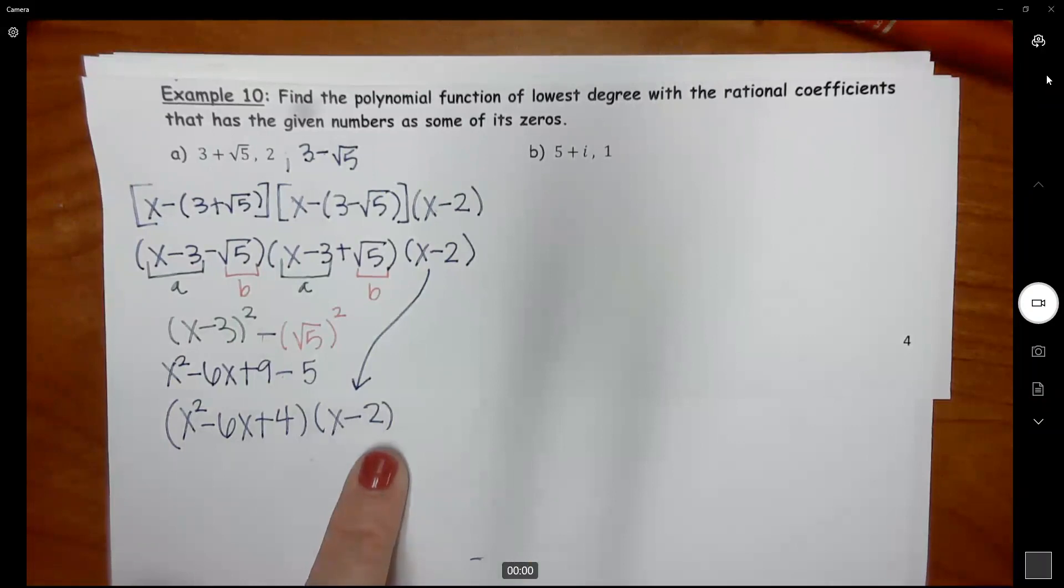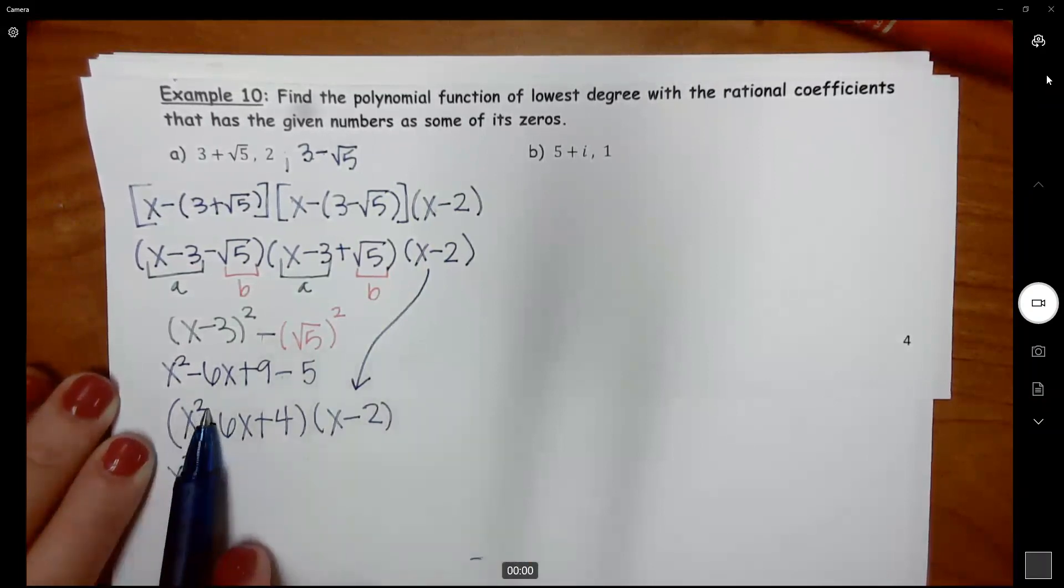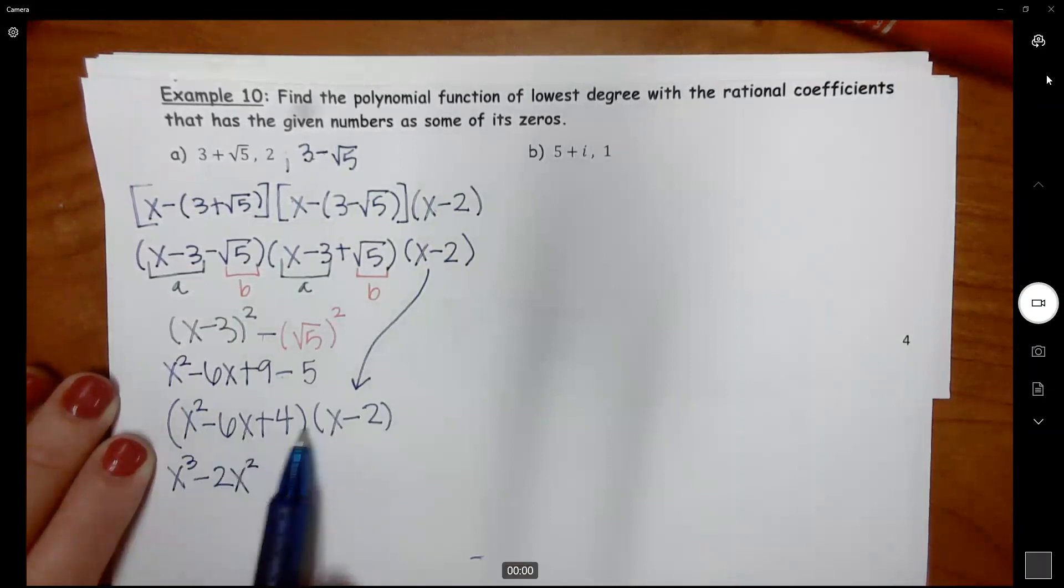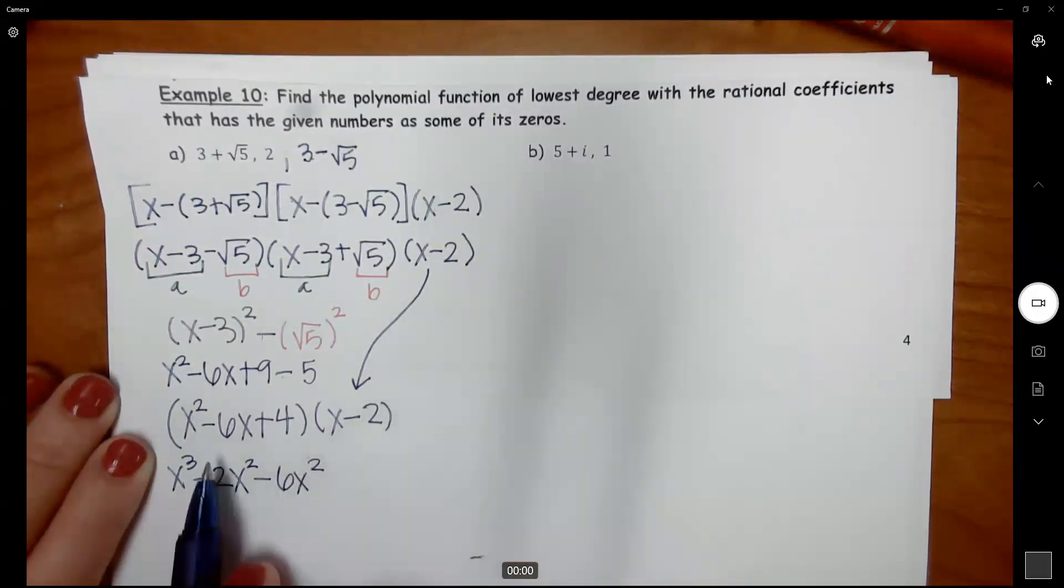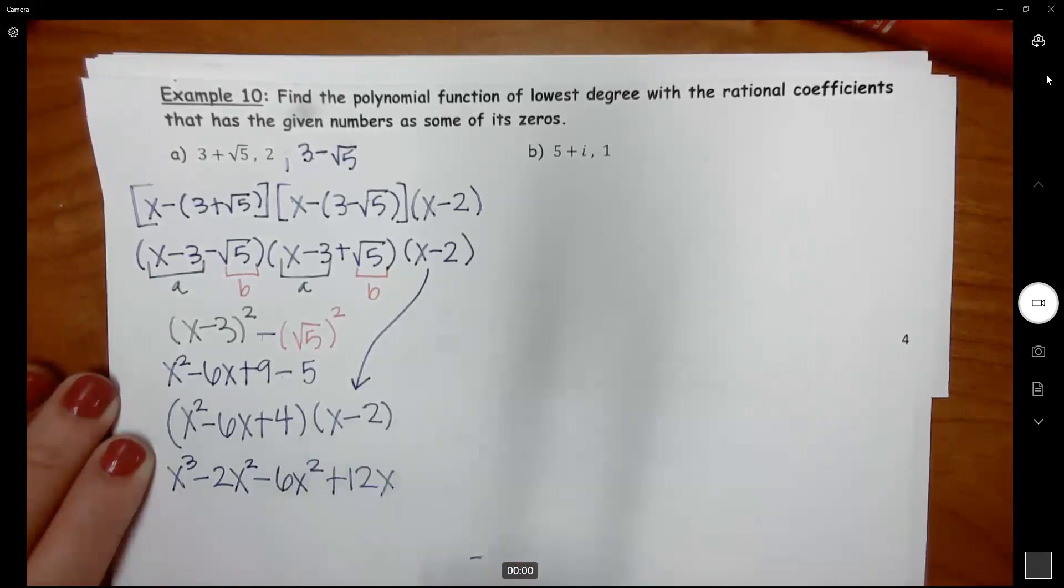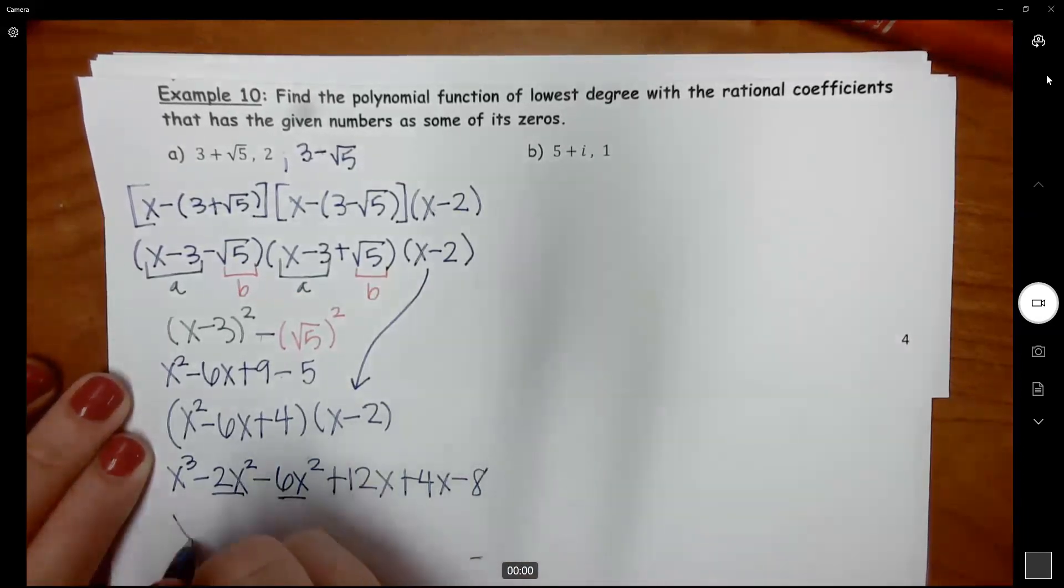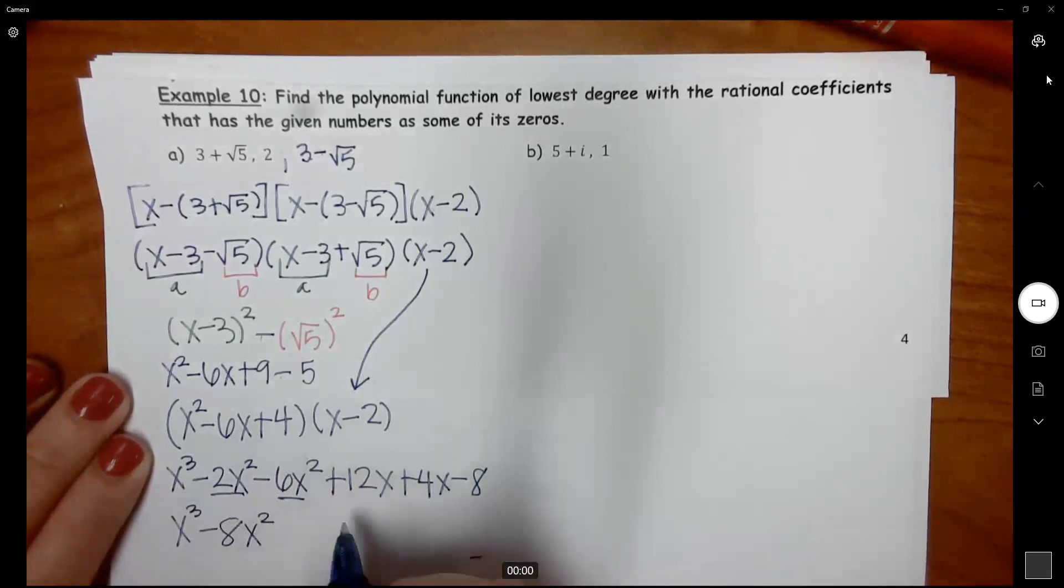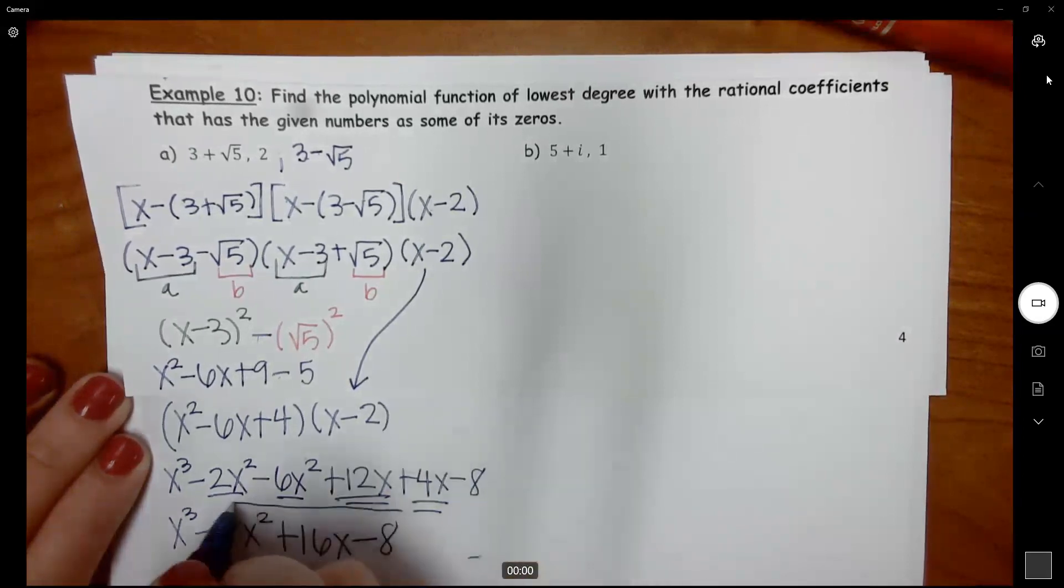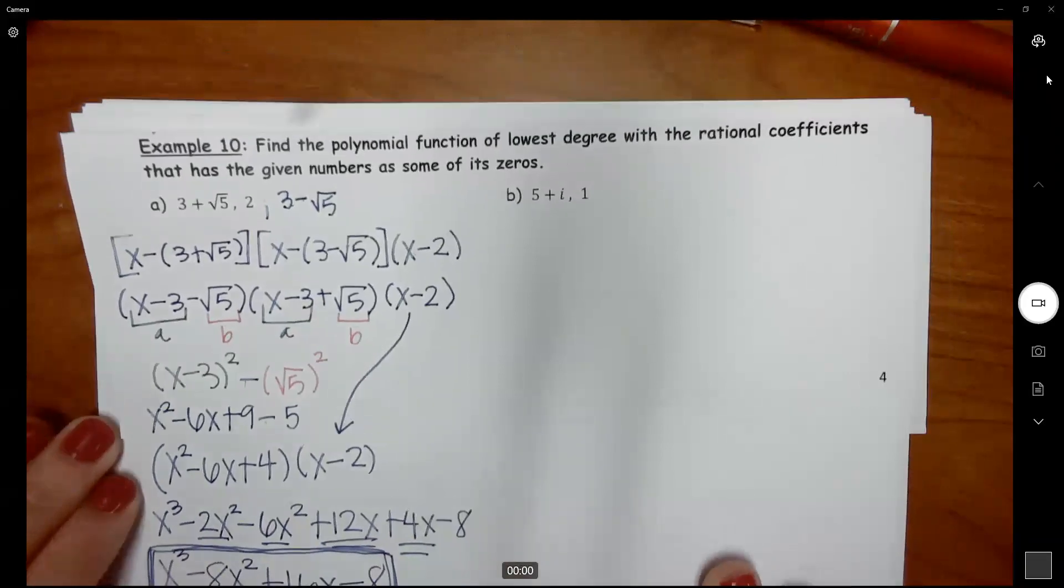And then all the while, we still have X minus 2. Now I need to multiply a trinomial times a binomial. So we'll do X squared times both of these. So X squared times X is X cubed, X squared times negative 2 is negative 2X squared. Now we're going to do negative 6X times both. Then 4 times both, you get plus 4X and then minus 8. So combine your like terms. It's going to give me negative 8X squared and then like terms here plus 16X and then minus 8. So this is my polynomial with these zeros.